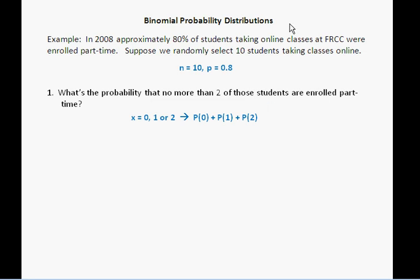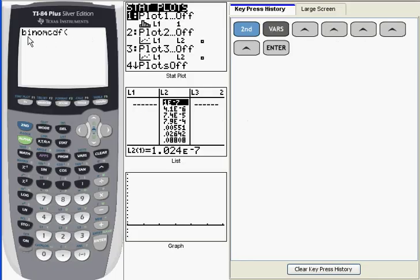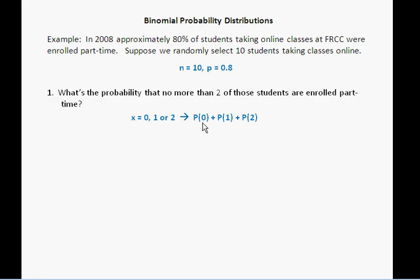You'll note in the function that the C stands for cumulative. And what it does is it accumulates the probability starting with the probability of x equal to 0. And that's where we're starting with this problem. We're starting with the probability of x equal to 0, and we're summing up to and including the probability of x equal to 2.